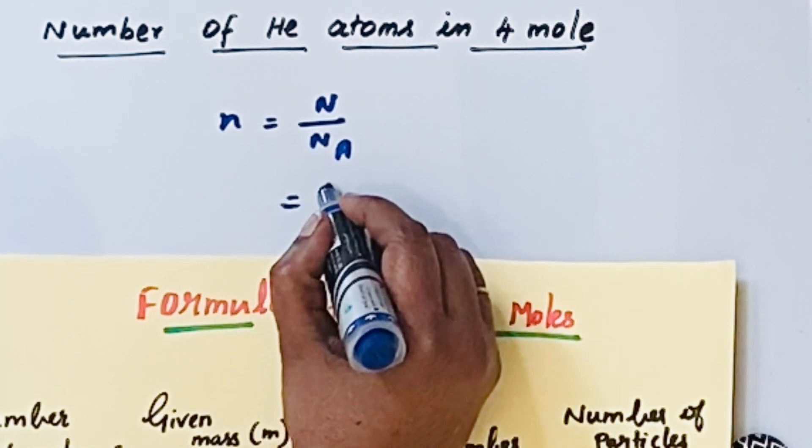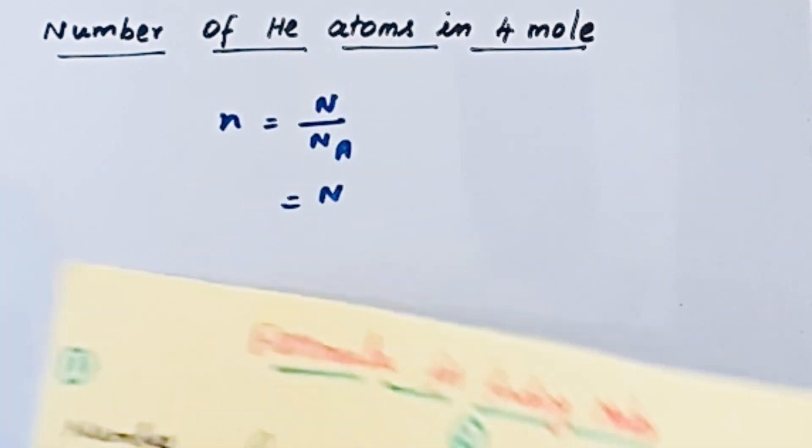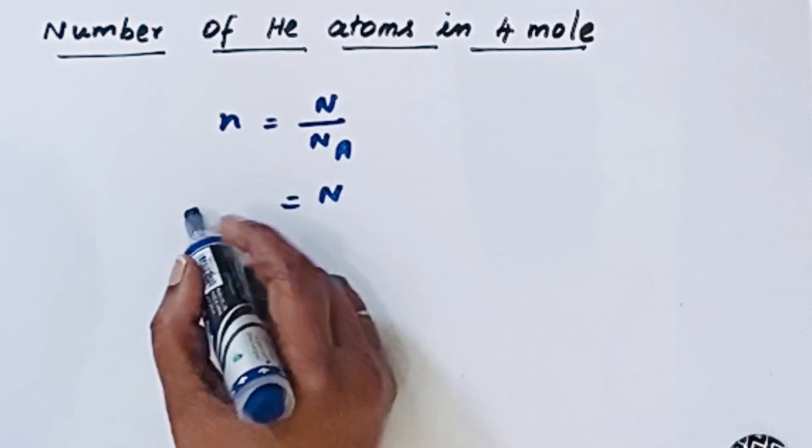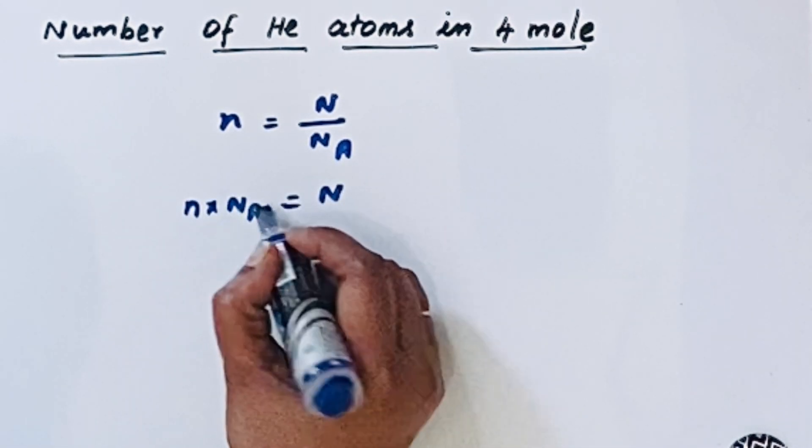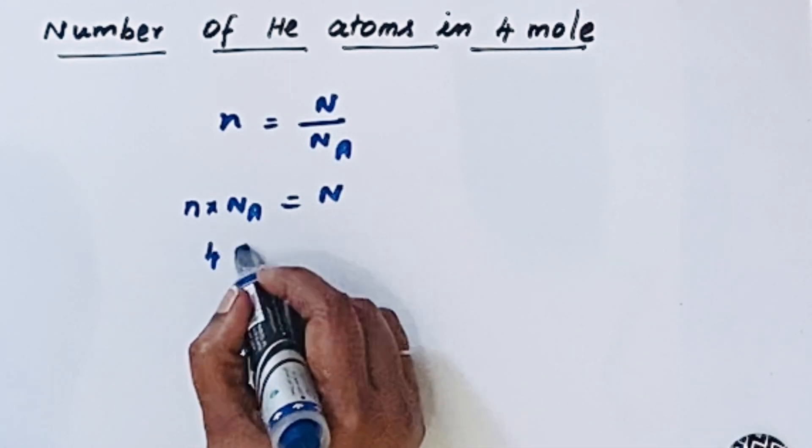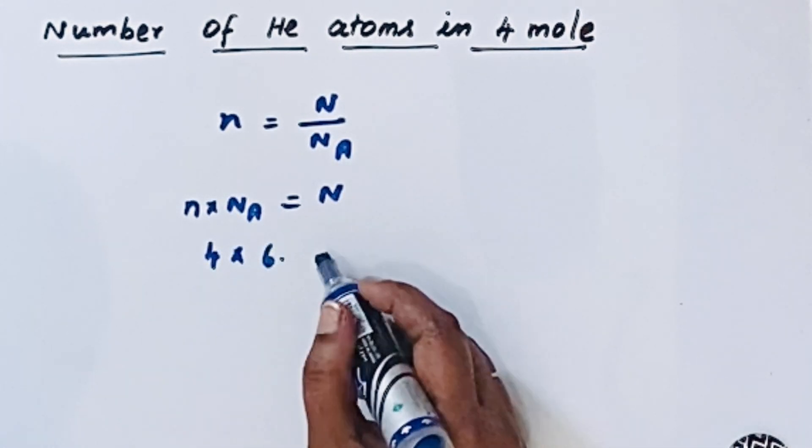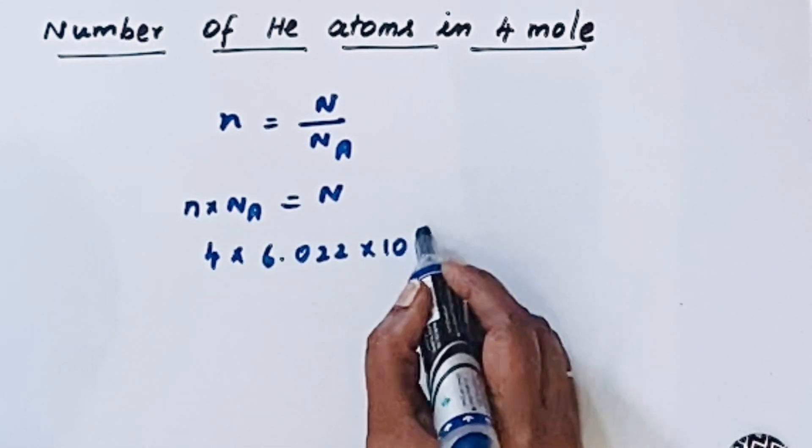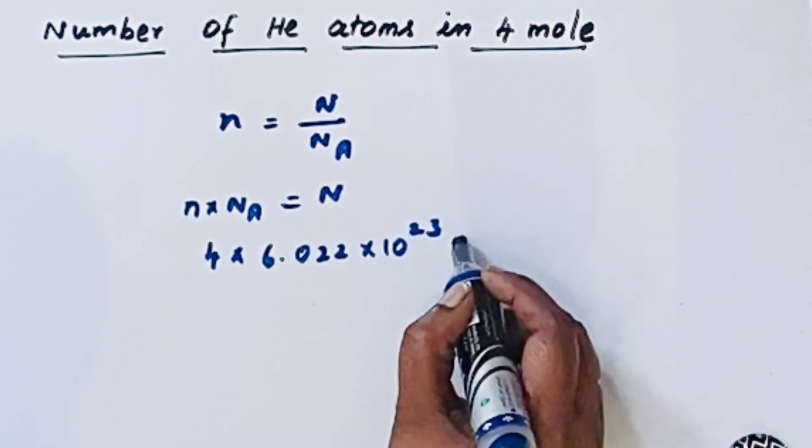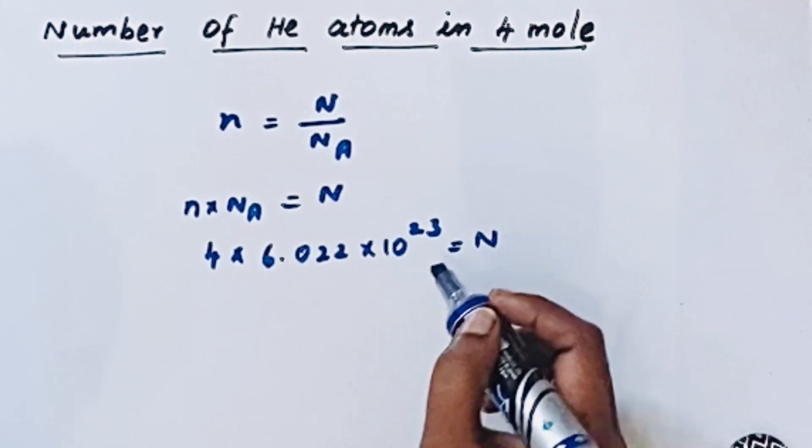So let us put N here, and then we can bring Avogadro's number to this side. 4 moles times Avogadro's number, which is a constant 6.022 × 10²³, equals the number of atoms.